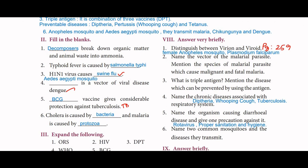Next: name the vector of the malarial parasite and mention the species of malarial parasite which cause malignant and fatal malaria. Female Anopheles mosquito is the vector of the malarial parasite. Plasmodium falciparum causes malignant and fatal malaria.